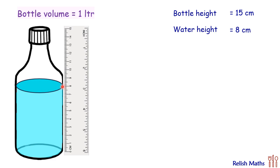Then the volume of water is πr²h. Now here the height is 8 centimeter so volume of water will be 8πr².